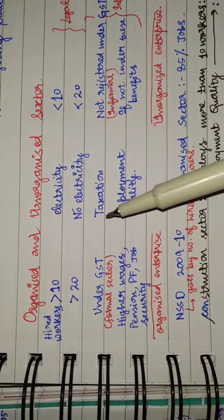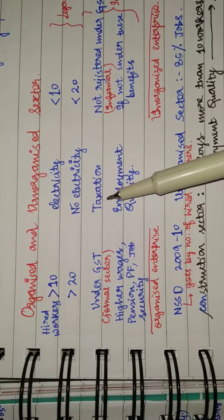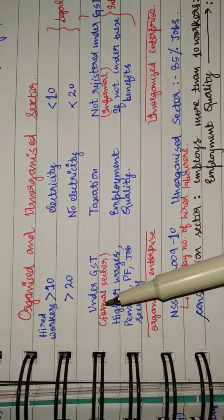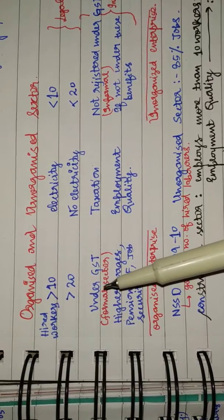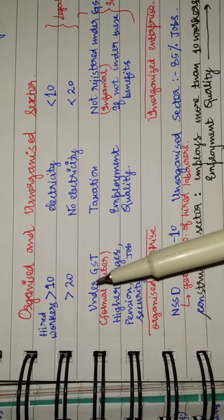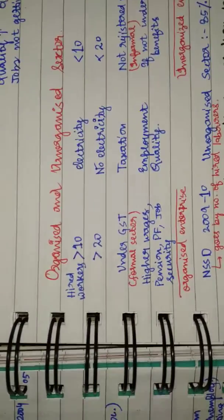Now there are two other interpretations. First, on the basis of taxation: if an enterprise has been registered under taxation, that is GST, then we say it's a formal sector or organized enterprise. This is also known as the formalization of economy.